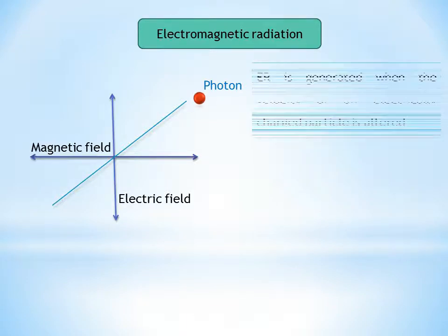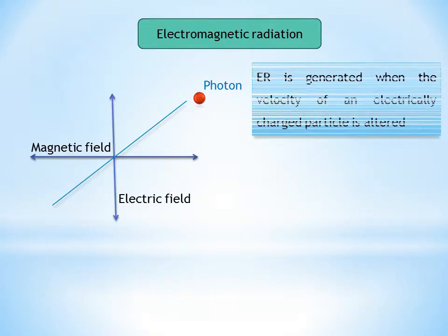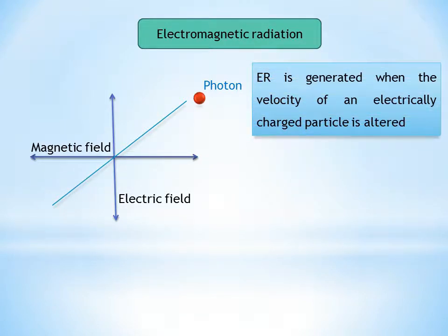Gamma rays, X-rays, ultraviolet rays, visible light, infrared radiation or heat, microwaves and radio waves are all examples of electromagnetic radiation.